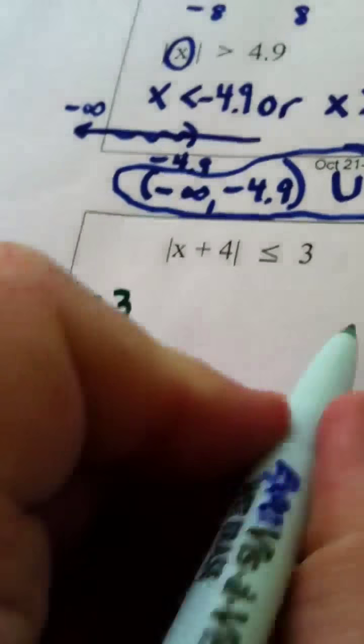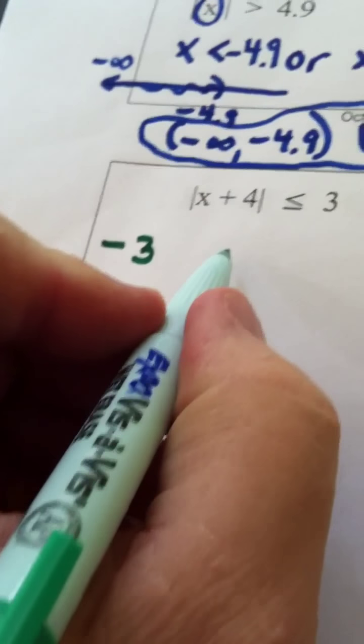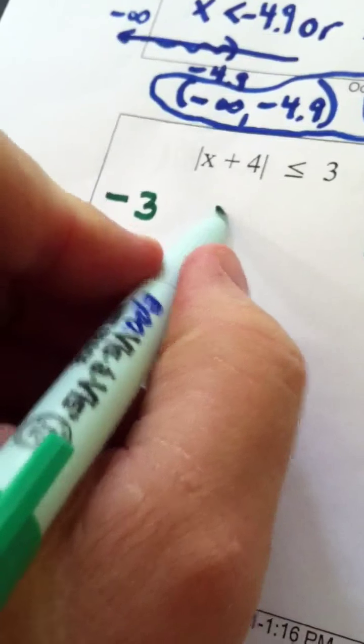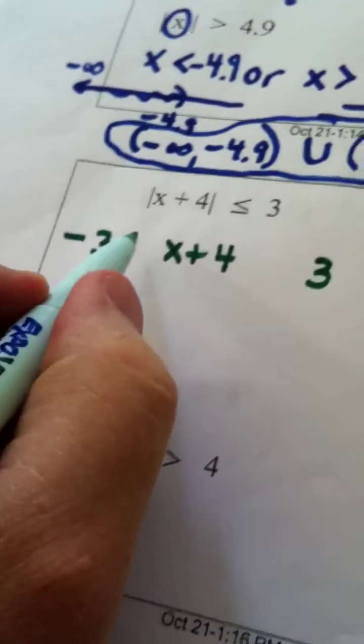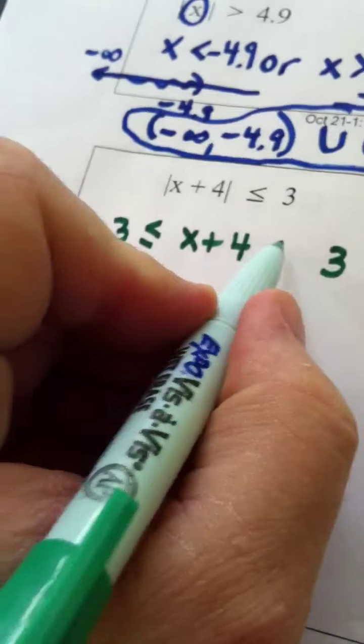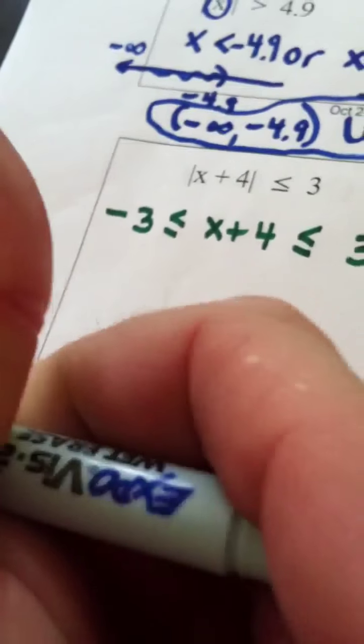That means negative 3 and 3 are on my left and right, or my extremes, from this side to this side. x plus 4 is in the middle, and with a sandwich, the tips always point to the left, or they always point that way.